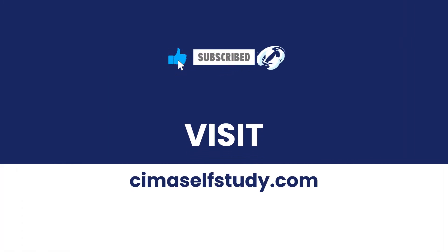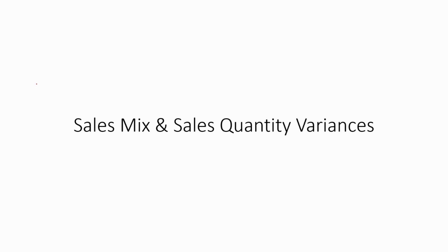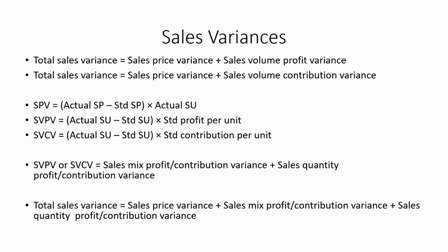In this video, I am going to discuss about sales mix and sales quantity variances. We discussed about sales variances in an earlier video. We can calculate the total sales variance by adding up the sales price variance and the sales volume profit variance. We use the sales volume profit variance when there is an absorption costing system, and the sales volume contribution variance when there is a marginal costing system.